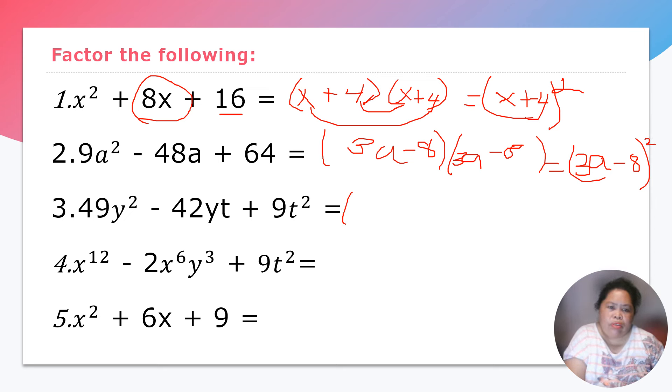Next. We have here 49y squared minus 42yt plus 9t squared. So I think we got answer here. 7y and then we have both negative 3t. So we have here 7 times 3 is 21, 21 times 2 is 42. And then for 9, we have 2 negatives, that is positive 9. So we can say that is 7y minus 3t square. Easy, right?